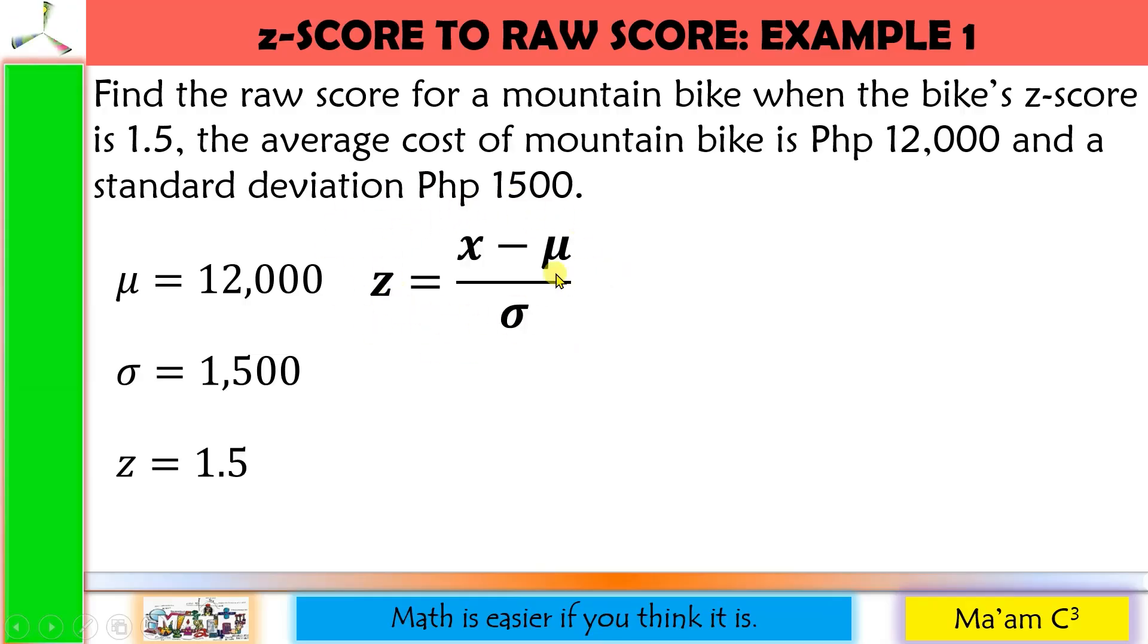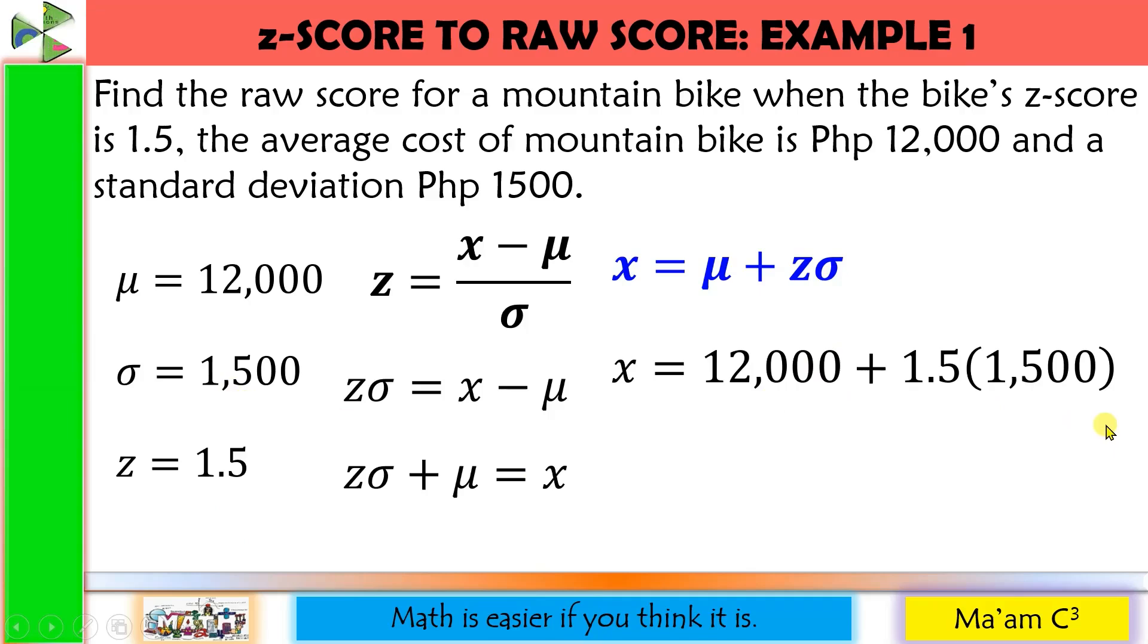We are asked to solve for the raw score. Let us first recall the formula that we had earlier. From here, we are going to manipulate this so that we could derive the formula for X. So it's either we multiply both sides by sigma or for shortcut, we simply cross multiply. So this will become Z times sigma equals X minus mu. Since we are after the X, we will move negative mu to the other side. It will become positive. So here is now our formula for Z-score to raw score. Let us substitute our mu is 12,000 plus our Z-score is 1.5 multiplied by the sigma, 1,500. Computing this, it will give us 14,250. So this is the raw score that has a corresponding Z-score of 1.5.